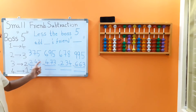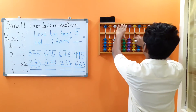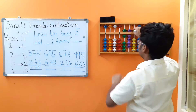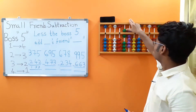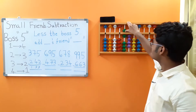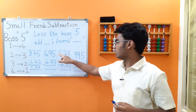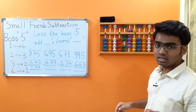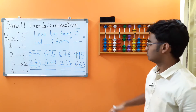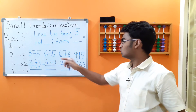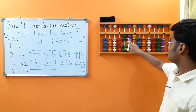695 minus 473. 6 minus 4: we do not have enough beads — less the boss 5, add 4's friend 1. 9 minus 7: we can subtract 7 directly since we already have 9 beads. 5 minus 3: 3's friend is 2 — less the boss 5, add 3's friend 2. We got the answer as 222.